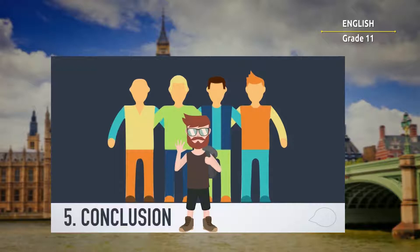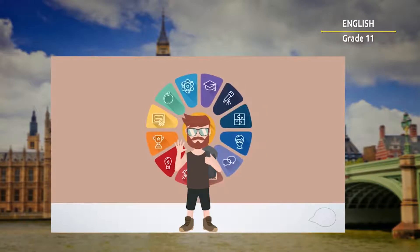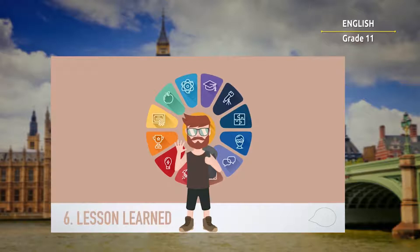In other words, you need to figure out what the ending of your story will be. For our example, the conclusion is no money, but they made lots of friends. The sixth and final step to telling a story in English is to decide the lesson learned. In other words, you need to determine what lesson or lessons you want to teach people through your story. For our example, the lesson learned is: always do the right thing and good things will happen.